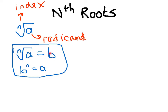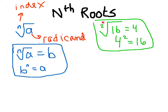The nth root of a equals some number if we can raise that number to the index and get what's inside. Let's do an example: the square root of 16. It's pretty well known that the square root of 16 equals 4. The reason is that if you take 4 and raise it to the power of the index, which is 2, you get 16. So the square root of 16 is 4 because 4 to the second power is 16.